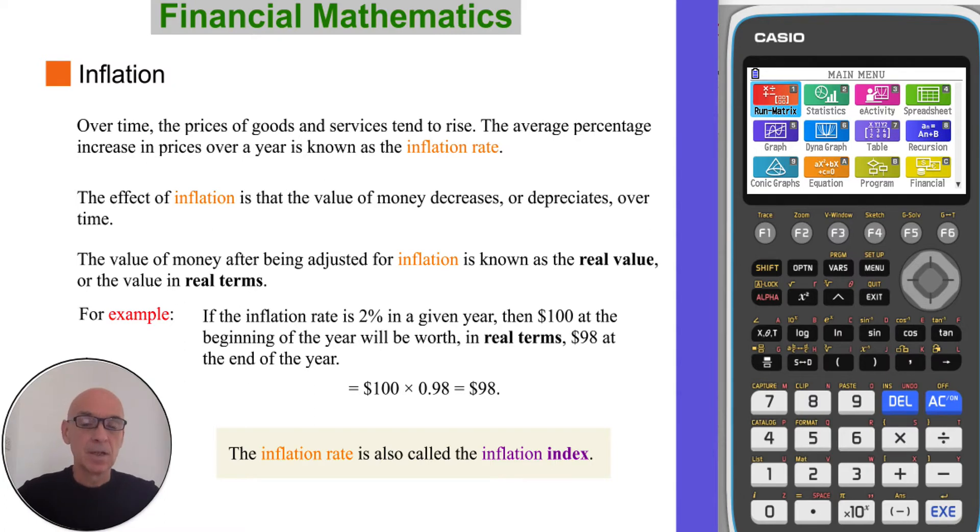For example, if the inflation rate is 2% in a given year, then $100 at the beginning of the year will be worth, in real terms, $98 at the end of the year, as shown in the calculation here.